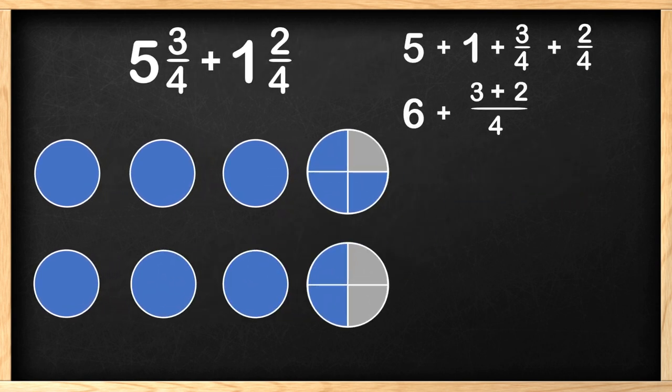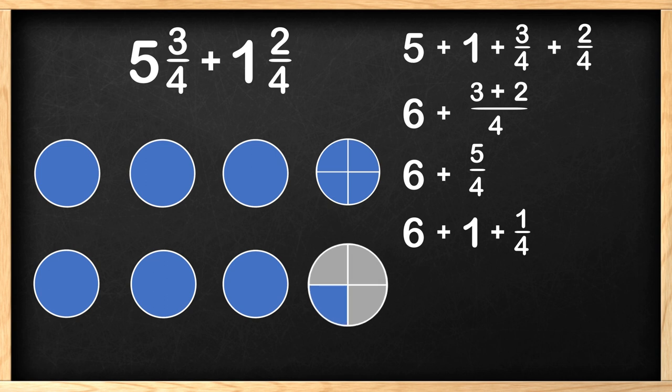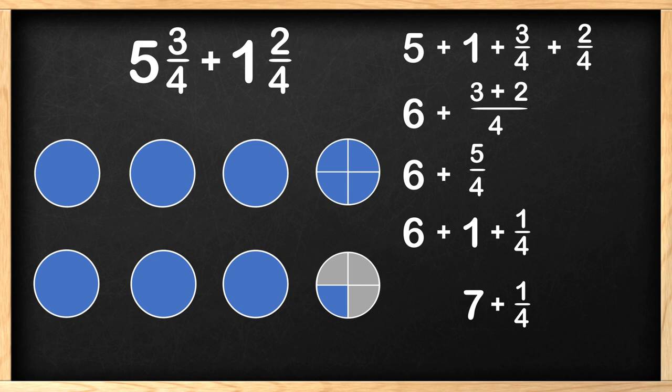Now let's add the fractional pieces. If I take 1 fourth from the bottom fraction and add it to the top fraction, we fill in 1 whole circle. We still have 1 fourth shaded left over in the bottom fraction circle. This means 3 fourths plus 2 fourths equals 1 and 1 fourth. All together we have 7 whole circles and 1 fourth of a circle. We can write this as 7 and 1 fourth.